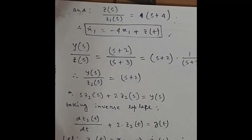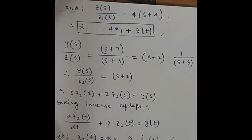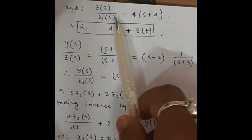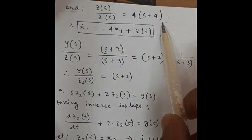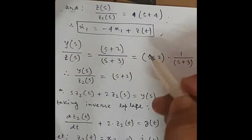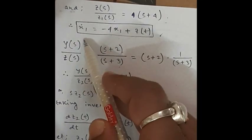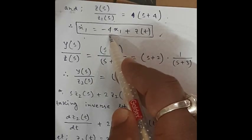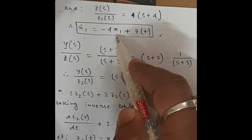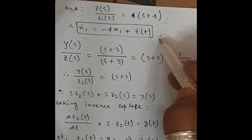We have already obtained the state equation. Now we find the state equation for the subsystem Z(s)/Z1(s) = (s + 4). Following the same process, we get ẋ1 = −4x1 + z(t) as the state equation for this subsystem.